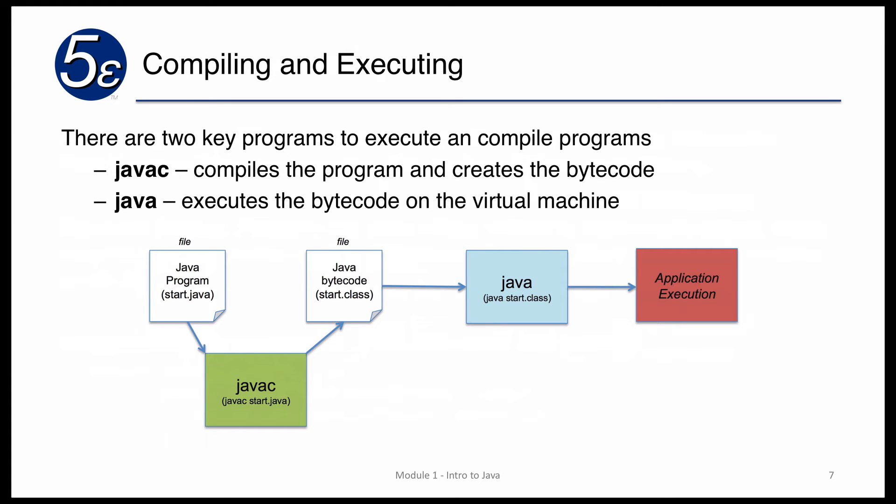Our Java program structure consists of a public class and methods. The public class is where the code starts, and there's a method called main which is the starting point of the program. When we compile and execute our code, we have a Java program — say start.java — and we compile it using JavaC by typing 'javac' followed by the name of the Java file. This produces a class file containing the bytecode. Then to run it on our Java virtual machine, we simply type 'java' followed by the class name, and the application begins to execute. JavaC compiles, and Java executes the bytecode on the virtual machine.